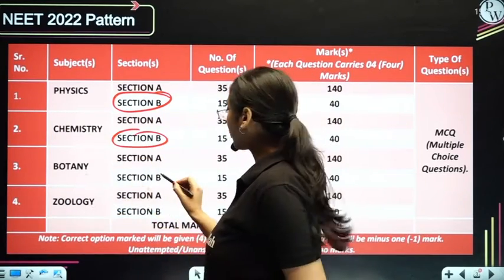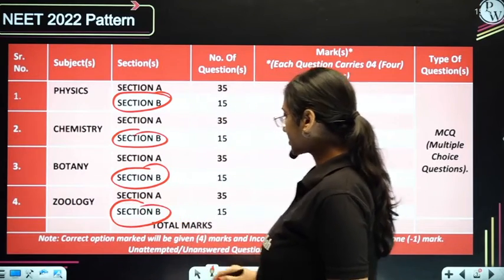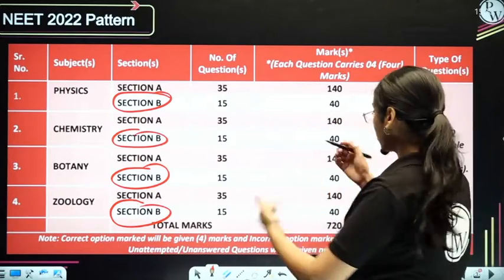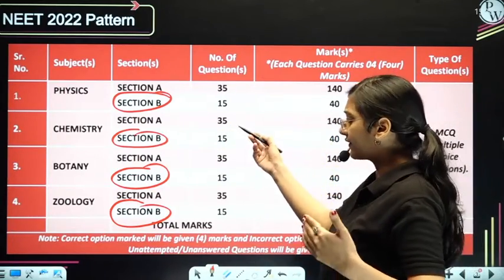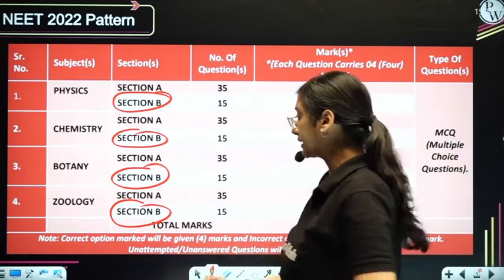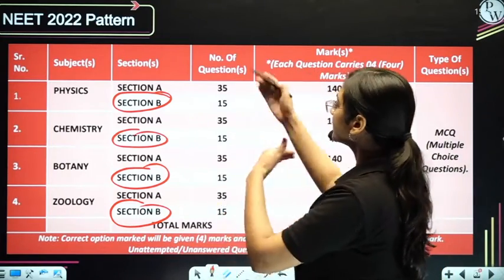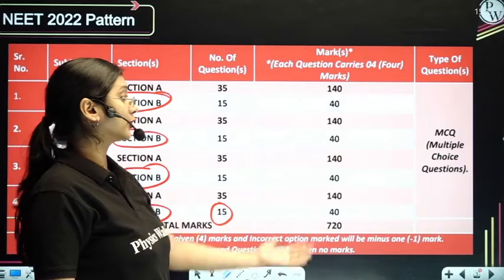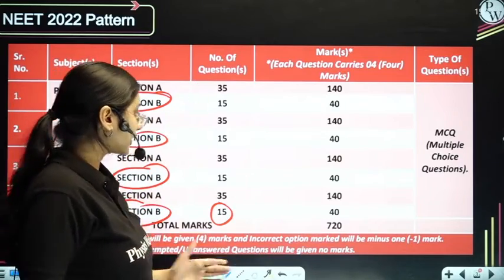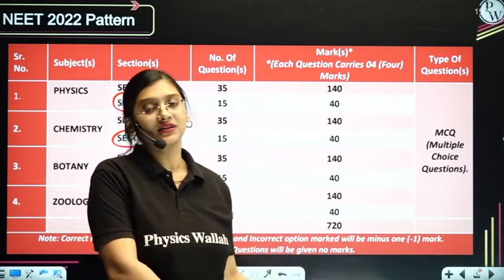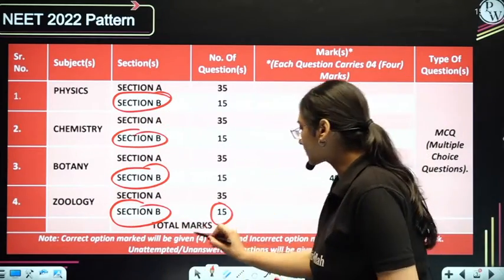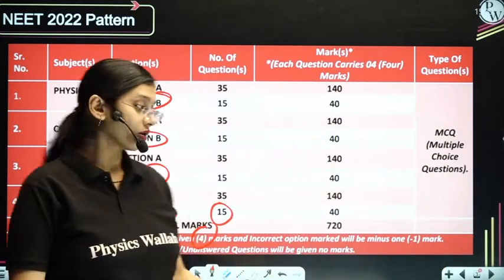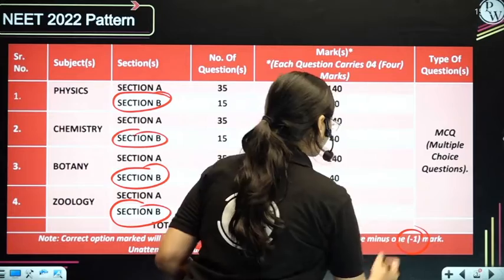The same applies for botany and zoology — both will have section A and section B. Total questions from section A would be 35 for all subjects, including botany and zoology separately, and section B has 15 questions. If you give a right answer you get 4 marks for that question.